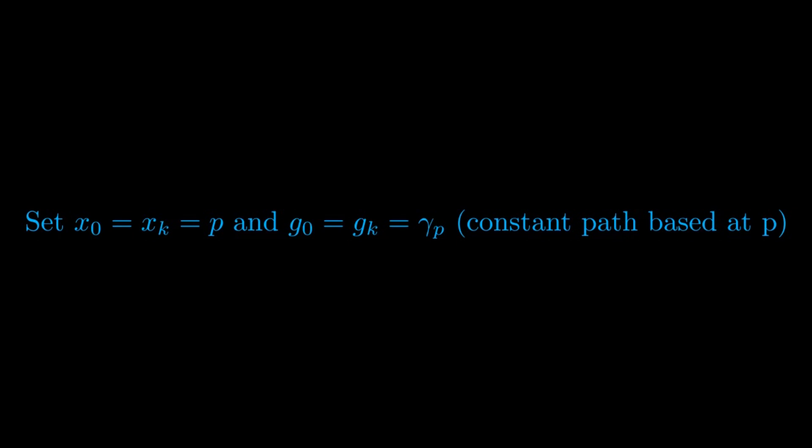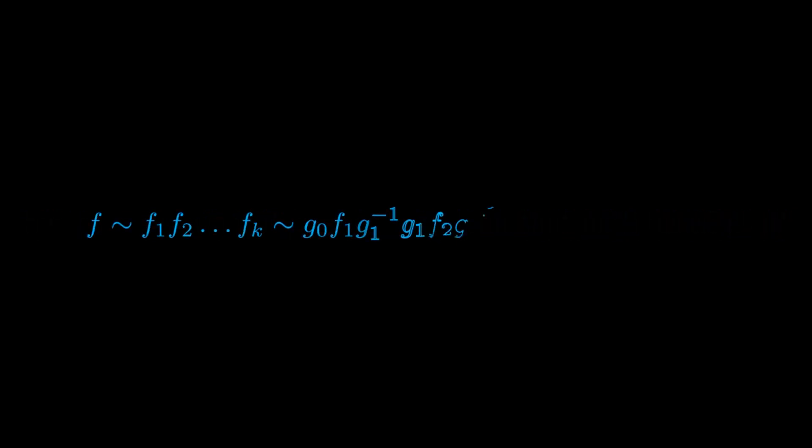We will be able to write our path F as the concatenation of the various F_i's that is in turn homotopic to the following expression by utilizing the algebraic properties of the fundamental group. Here by j to the minus 1 we denote the path reversed. We will now call F_i bar the following composition of paths, that is G_{i-1} F_i composed with G_i to the minus 1, that is the inverse of G_i.